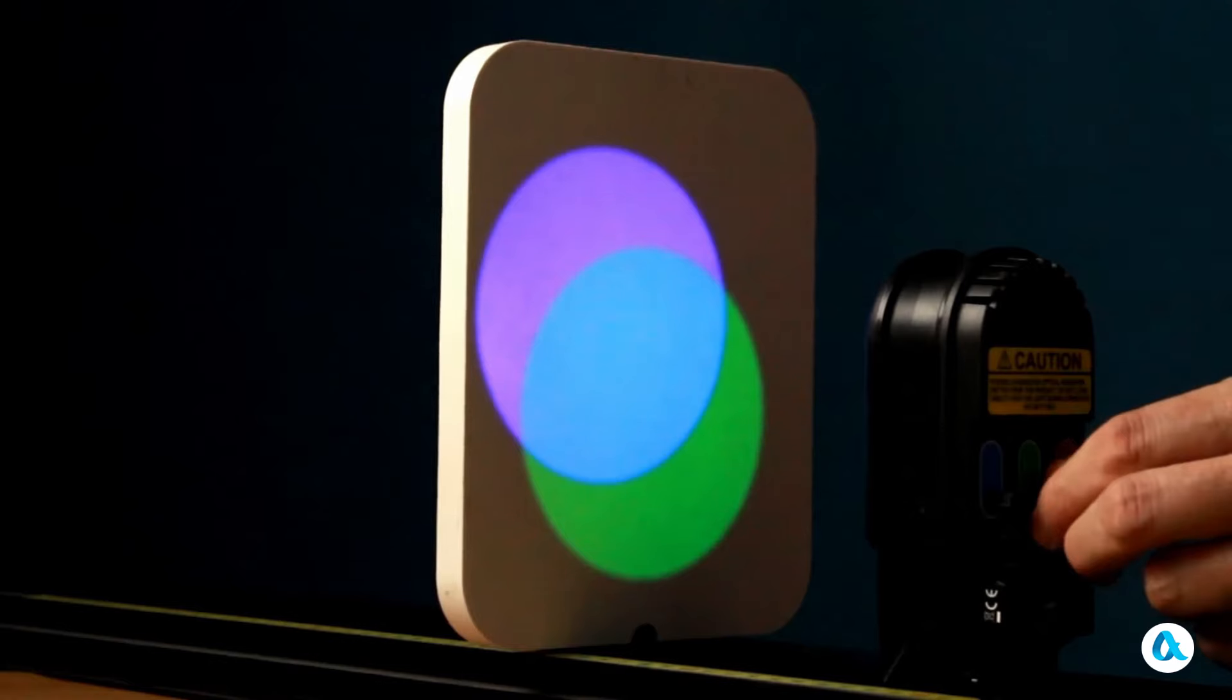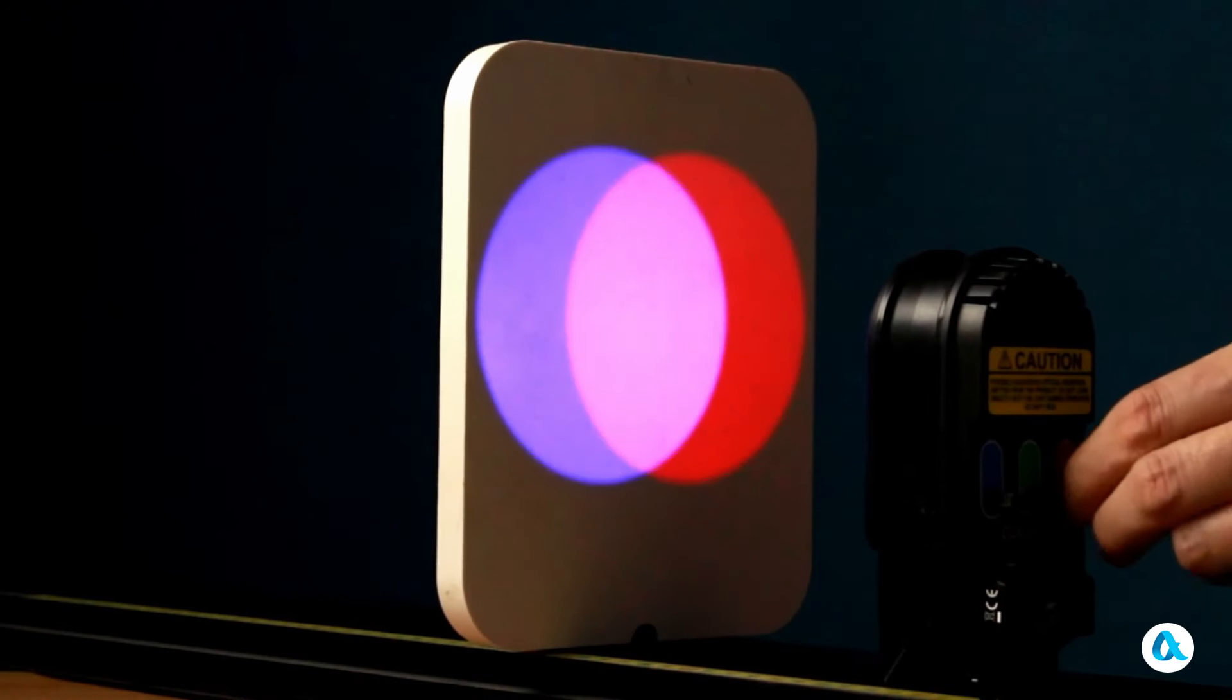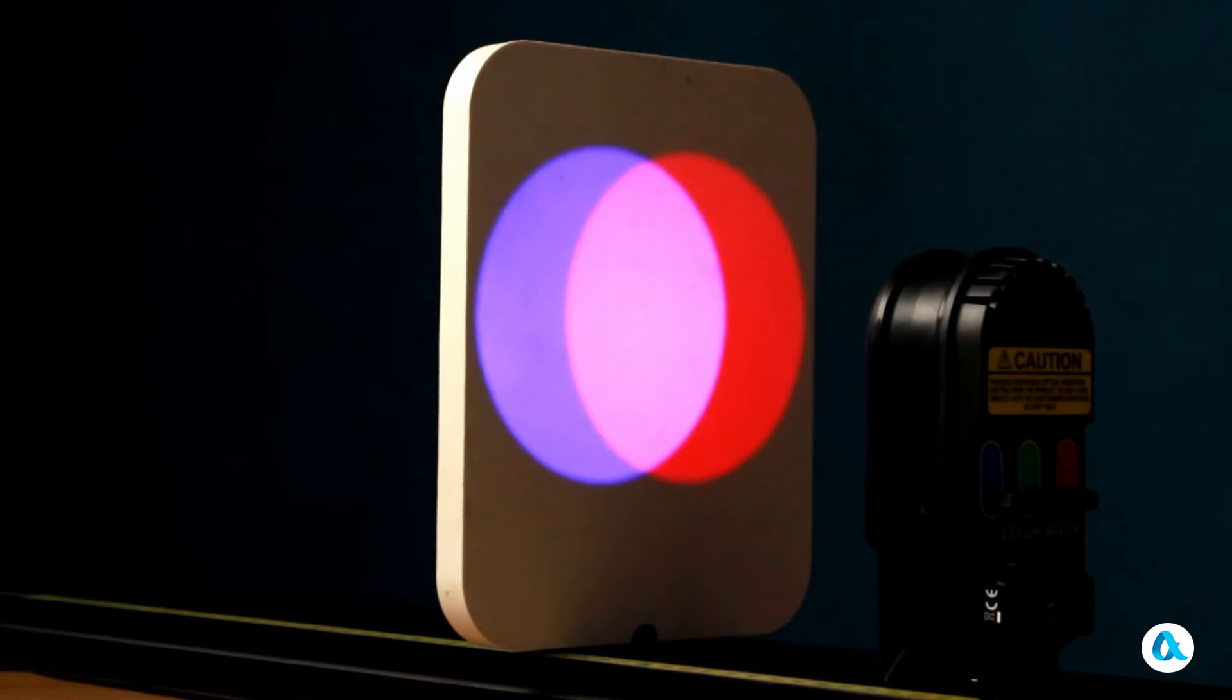Now, let's deactivate the green color and activate the red color. At the intersection, we obtain a color that is known as magenta.